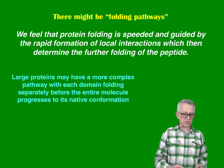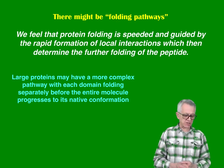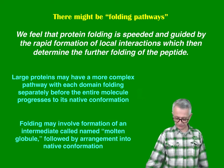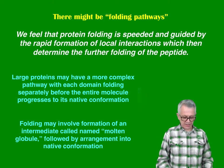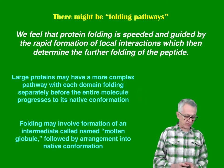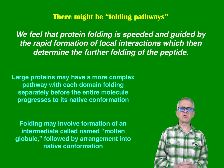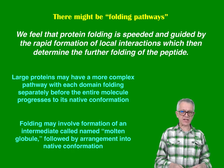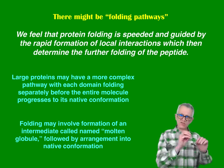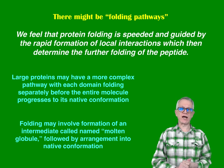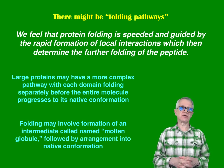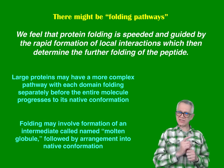Larger proteins may also have a more complex pathway, with each domain folding separately before the entire molecule progresses to its native conformation. We also know that folding may involve the formation of intermediates called the molten globule, followed by rearrangements into the native conformation. So we know it is not a random process and not a single pathway — there are multiple pathways that converge.